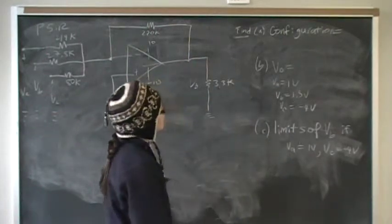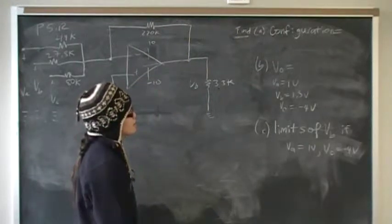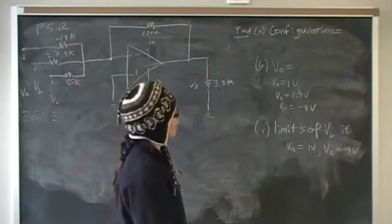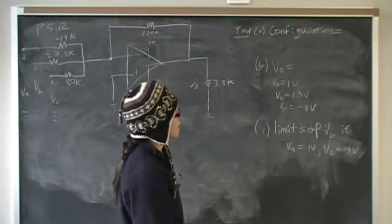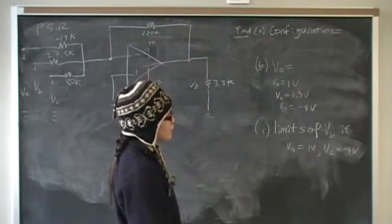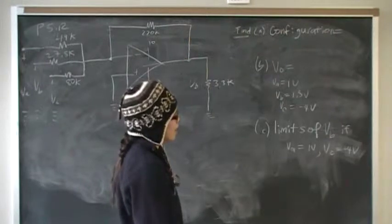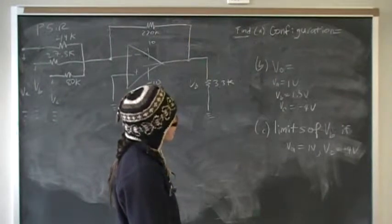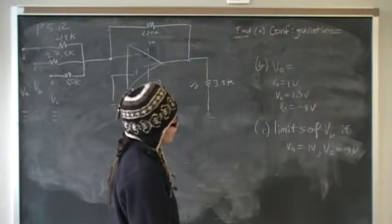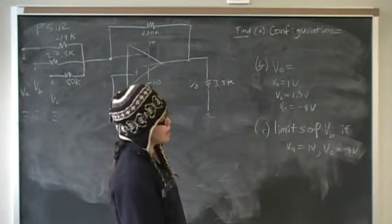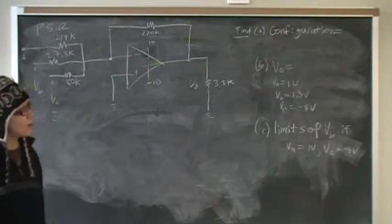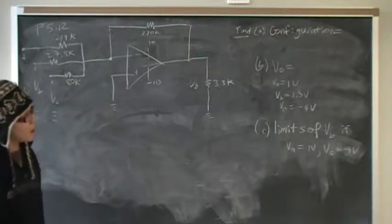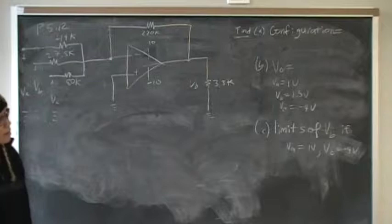We want to know what configuration this is, and we want to find the output voltage Vout if we have three signals: 1 volt, 1.5 volts, and negative 4 volts. In part C, we need to find the limits of Vb if we keep Va and Vc the same and allow Vb to vary. What are the limits before the voltage saturates?